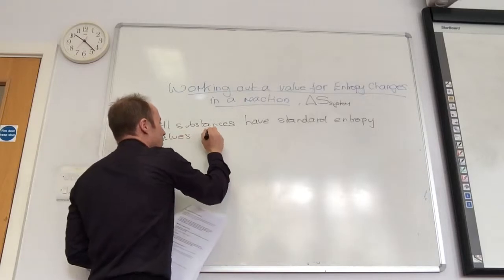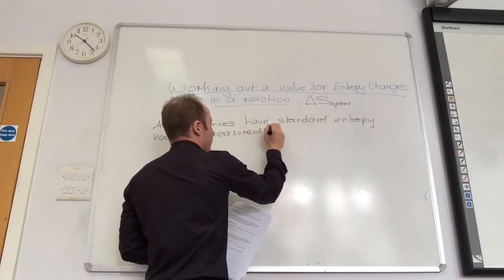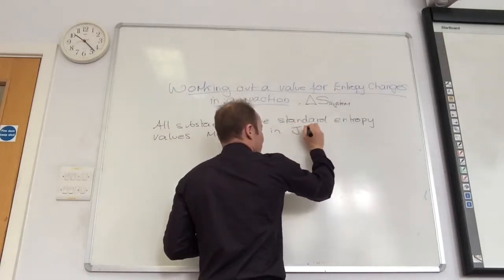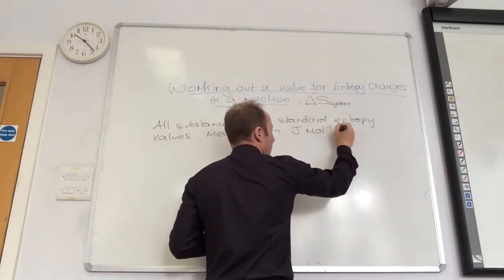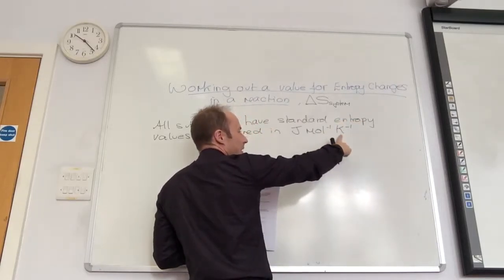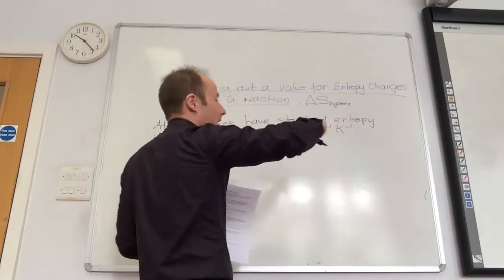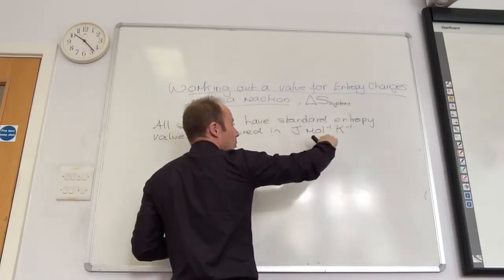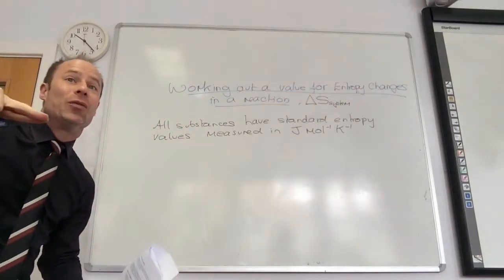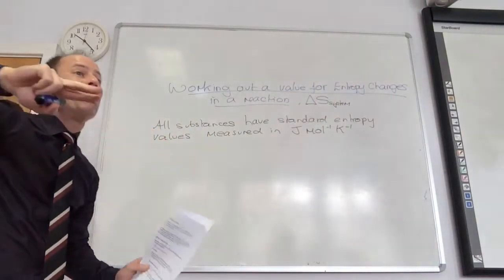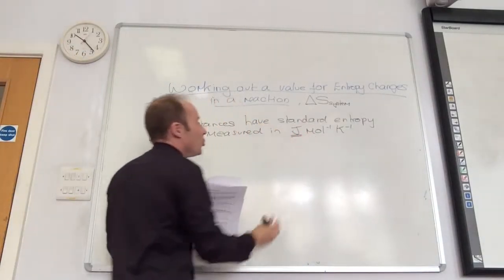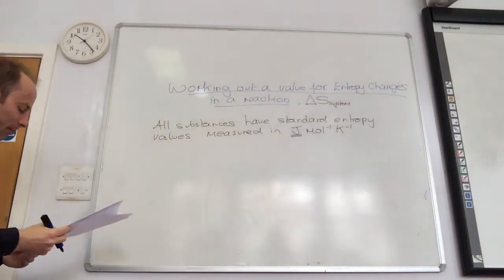These are measured in joules per mole per kelvin — remember, kelvin is just a different way of measuring temperature. Notice that's odd: it's joules, not kilojoules. This is where people mess up big time. In entropy, it's joules per mole per kelvin, not kilojoules.